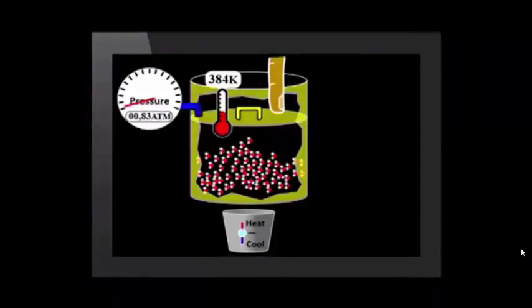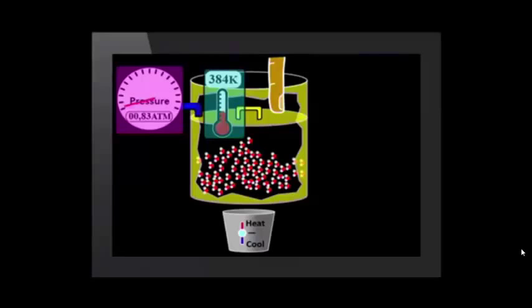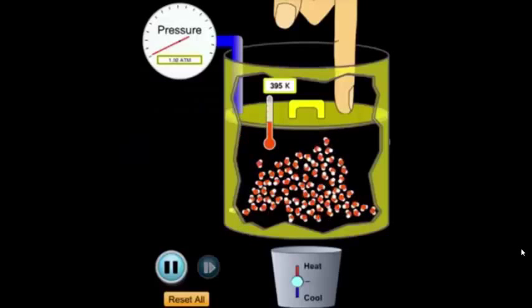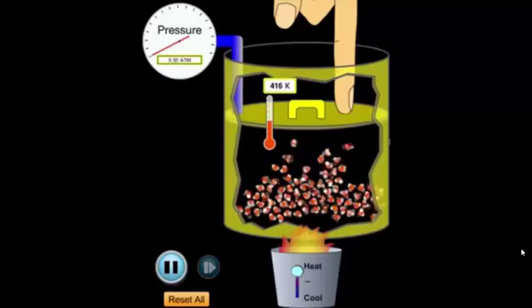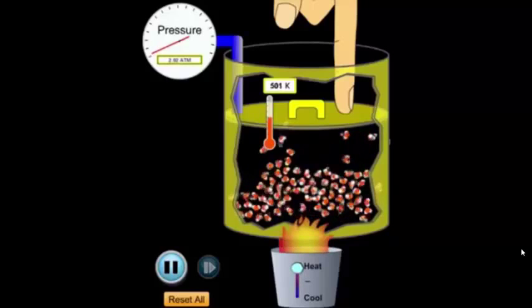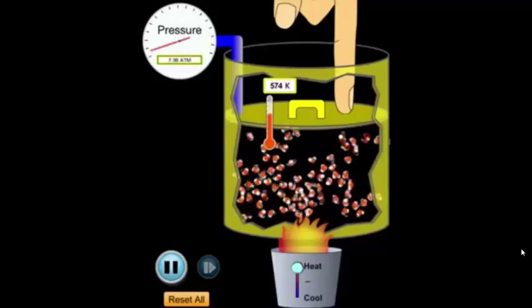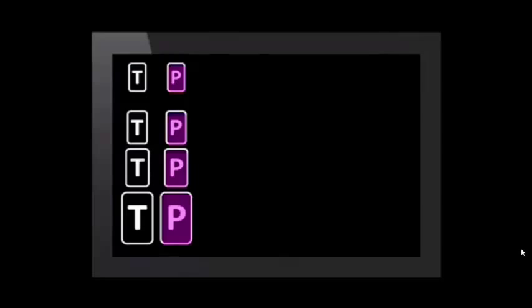This time, let's include the Kelvin temperature measurement and the pressure gauge in our view of the simulation. Notice that as the temperature measurement increases, the pressure we read on the gauge also increases. So, as temperature increases, pressure increases. But we already know that pressure is not directly proportional to degrees Celsius temperature.